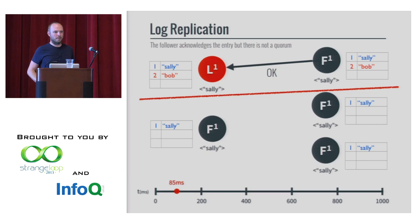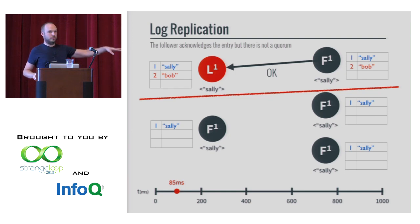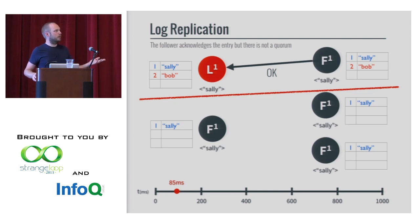Question: what if two more nodes crash? If you had an additional two on the cluster, the total size would be seven and your majority would be four. If they don't recover, you'd have to remove them from the cluster membership.